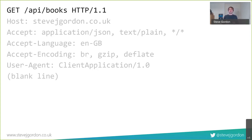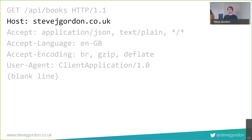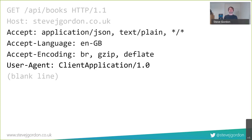The client gets a certificate from the server to verify identity, we decide how to encrypt traffic and what key exchange to use, and then we have our TLS connection. The client then sends the actual HTTP request over the wire. It's basically just ASCII text: the first line has the GET method, the resource path /api/books, and the protocol version HTTP/1.1. Then we have headers as key-value pairs - host, accept, accept-language, accept-encoding, and user-agent.